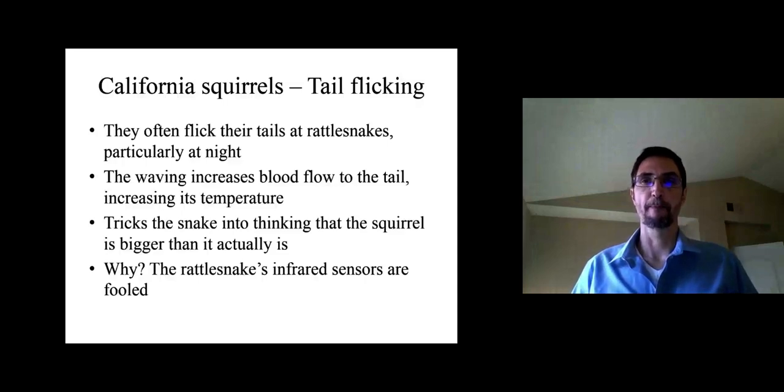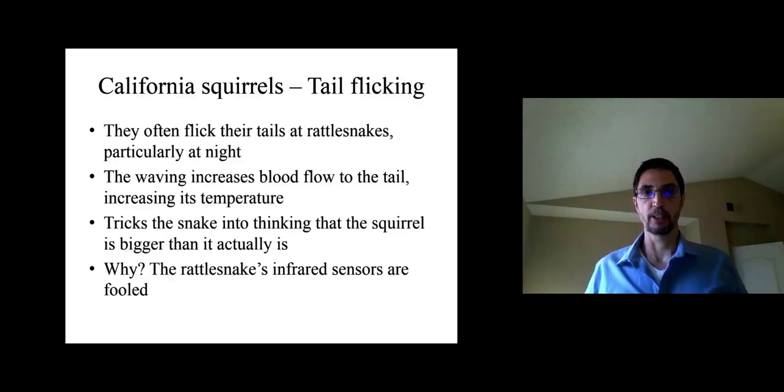So one of the things that you sometimes see, one of the behaviors that you see these California squirrels engage in is what's called the tail-flicking response. So they often flick their tails at the rattlesnakes, particularly at night. So they'll approach, they'll get fairly close to the rattlesnake, but far enough to not be quickly attacked by them. And then they'll start flicking their tails, they'll wave their tails repeatedly.